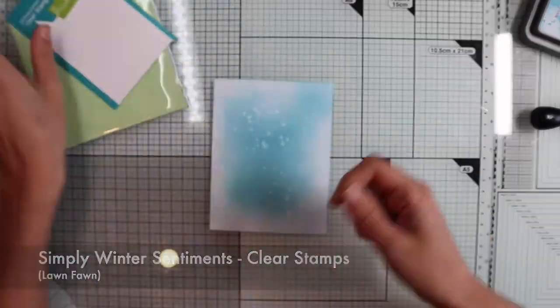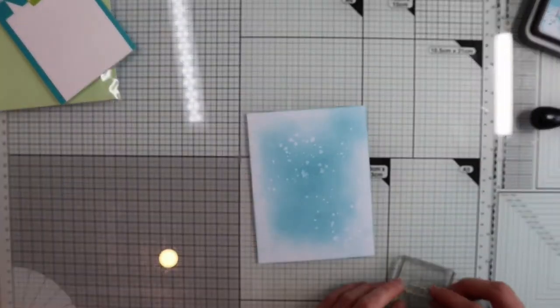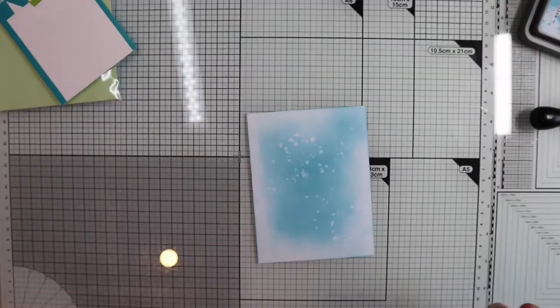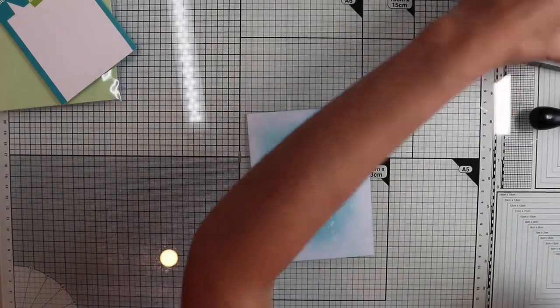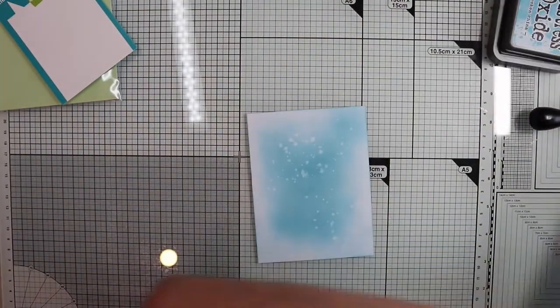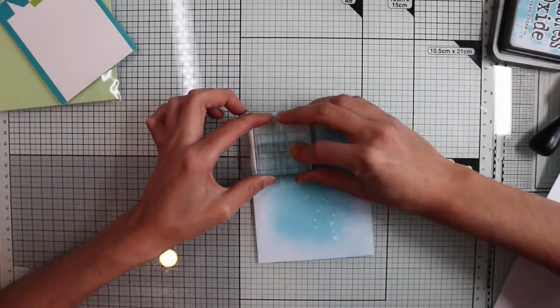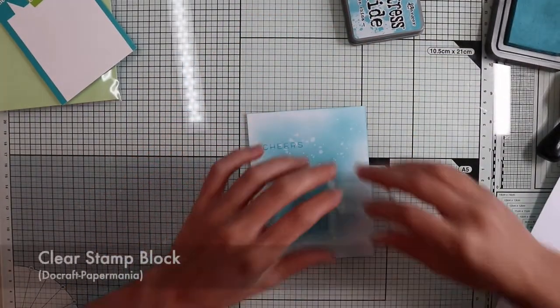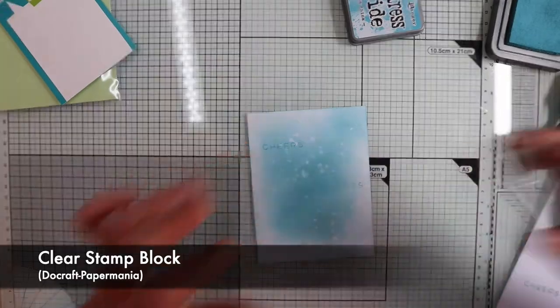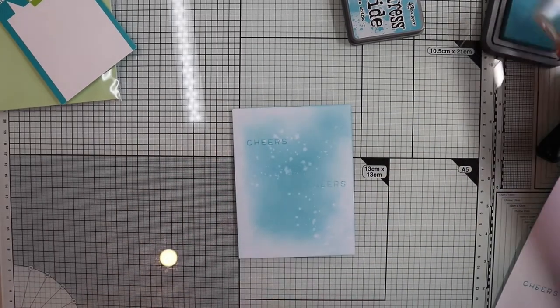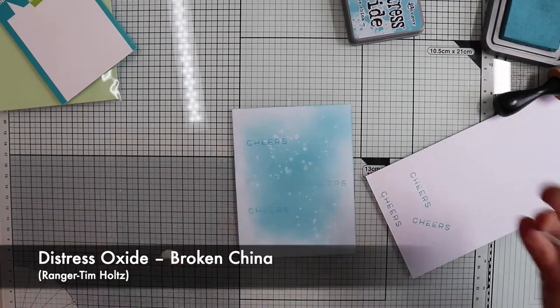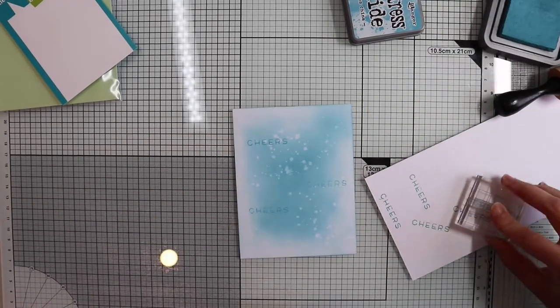We can leave this cool background as it is, or add some interest, which I will do by making a series of random stamps of the word Cheers. You can use any stamp, like figures or other words, such as greetings. I'm gonna use the same color as the background, so as to keep a subtle background. Indeed, as you can see, I'm using the second or the third generation stamp.